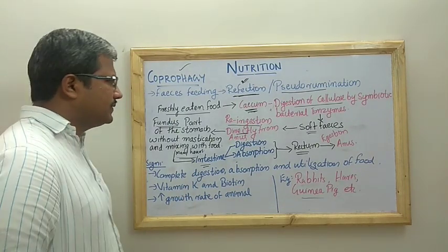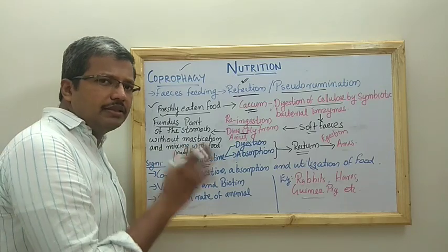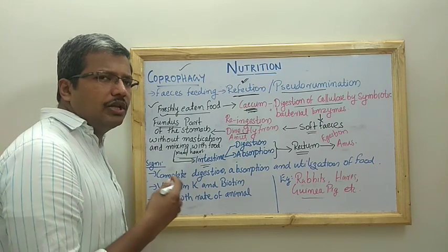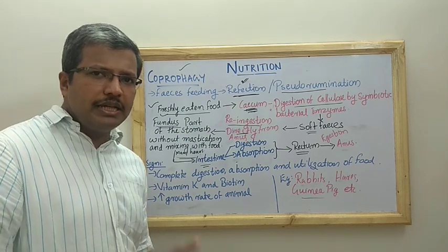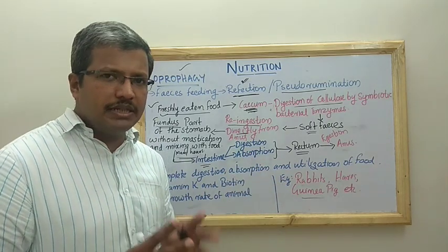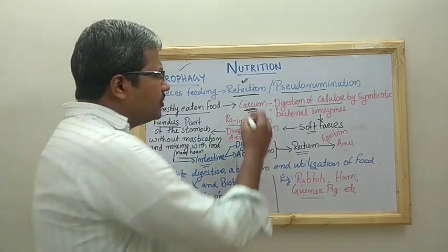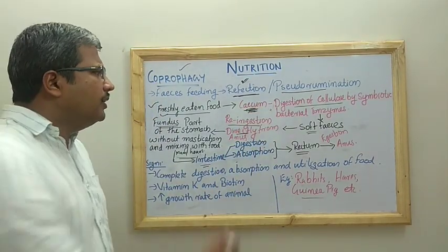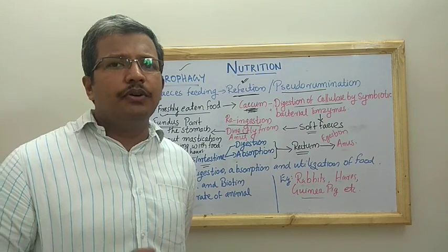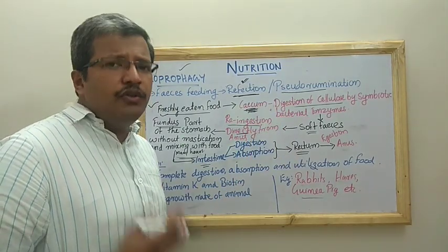Make sure you know these two extra names. Now let us see the mechanism — how coprophagy works. The freshly eaten food will be masticated and directly it will be moving into the cecum, without staying in the stomach or the intestine. It moves directly into the cecum, which is the extension of the intestine where you can find many symbiotic bacteria that help in digestion and take up nutrients. In the cecum, the cellulose content of the food will be digested with the help of symbiotic bacterial enzymes.